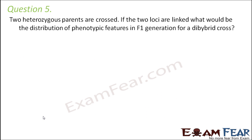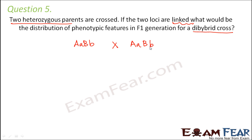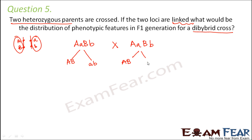Question number 5. Two heterozygous parents are crossed. If the two loci are linked, what would be the distribution of phenotypic features in F1 generation for a dihybrid cross? Since the question specifically mentions linkage, we consider it. The heterozygous parent has two traits A and B. Since A and B are linked, they get inherited together, and similarly small a and small b are on the homologous chromosome and also get inherited together. So the possible gametes are capital AB and small ab for each parent.